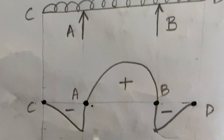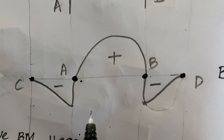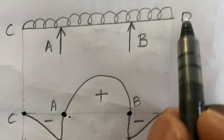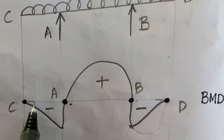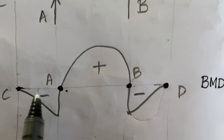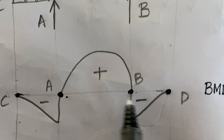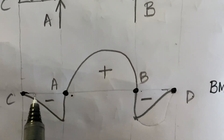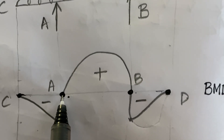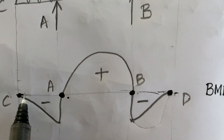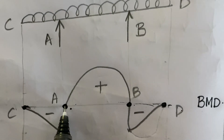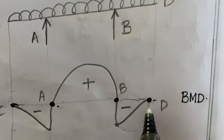The bending moment at the end of the length of the line should equal zero along the reference line. The point where the bending moment line reaches zero — if you look here at point C, at point A, at point B, and at point D — the bending moment reaches zero.